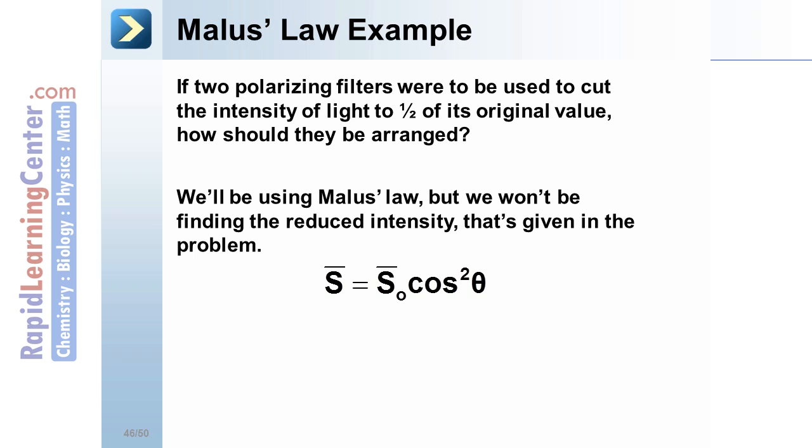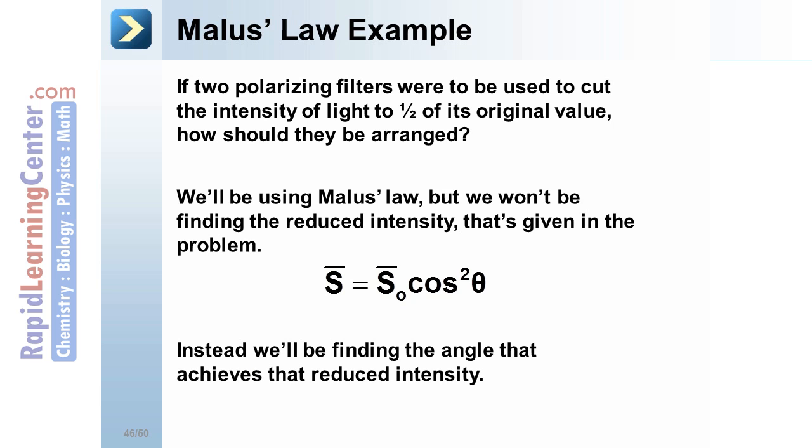We'll be using Malus's law, but we won't be finding the reduced intensity. That's already given in the problem. We'll be looking for the angle to achieve that characteristic one-half intensity of light.